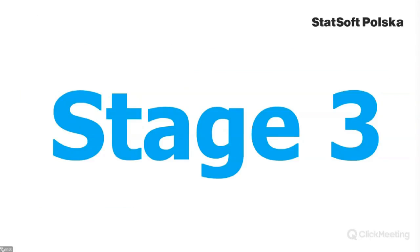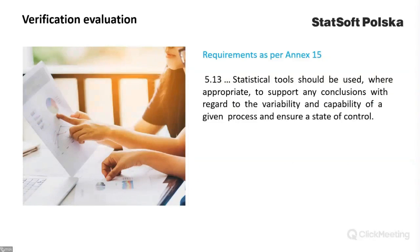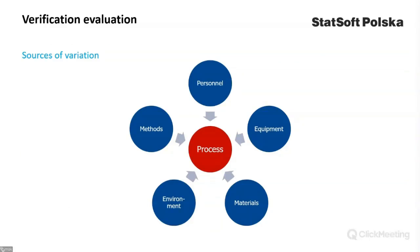Stage three: verification evaluation. In accordance with the requirements of Annex 15, statistical tools should be used where appropriate to support any conclusions with regard to the variability and capability of a given process and ensure a state of control. Once transferred to routine production, the process is exposed to long-term potential sources of variation related to changes in personnel, equipment, materials, environment and procedures. Therefore, at this stage of the life cycle, the objective is to identify, assess and control sources of variation that may disturb the process and generate out-of-specification results.